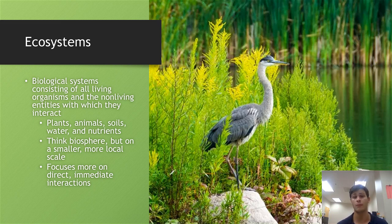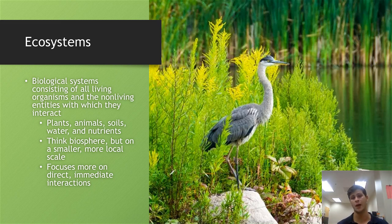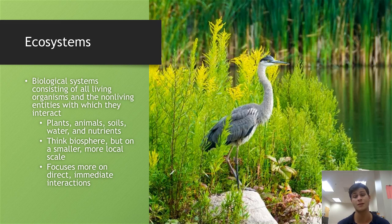Ecosystems are composed of many different components: things such as plants, animals, water, and nutrients. When you think of an ecosystem, think of the biosphere but on a smaller scale — living organisms interacting with smaller components of the atmosphere, hydrosphere, and lithosphere, but just on a much smaller, localized scale. Rather than focusing on global issues, ecosystems focus on more local, immediate interactions between organisms and their nonliving environments.